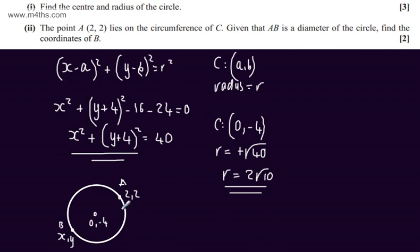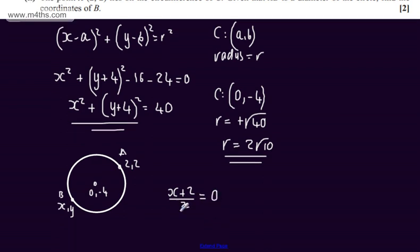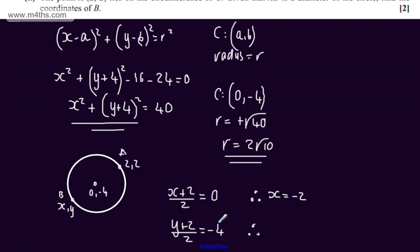There are a couple of different ways you can do this, but using the fact that the centre is the midpoint of the diameter, I can say that x plus 2 over 2 equals 0, and y plus 2 over 2 equals minus 4. Solving the first equation by multiplying both sides by 2 and subtracting 2, x equals minus 2. Solving the second, multiplying both sides by 2 gives minus 8, then subtracting 2, y equals minus 10.